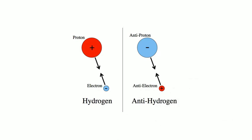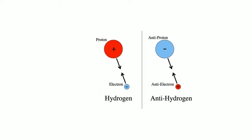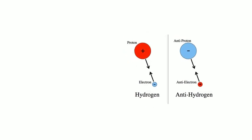Similarly, electrons with a negative electric charge have anti-electrons, known as positrons, with a positive electric charge.